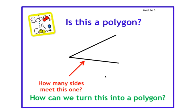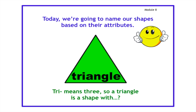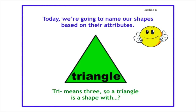So how can we turn this into a polygon? That's right, we can add another side here and then it will become a triangle. Today we're going to name our shapes based on their attributes. This is a triangle. Triangle means three, so a triangle is a shape with three sides and three angles. Remember the angles are where two lines meet to form a corner — but in second grade, we're not going to call them corners, we're going to call them angles.